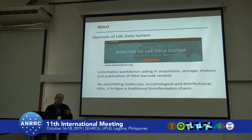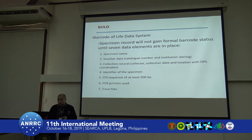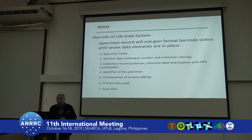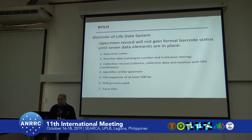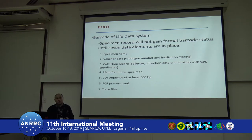Every time you submit a DNA barcode to BOLD, you must also provide the following data points: the specimen or species name, voucher data such as the catalog number and institution storage facility where it is stored, collection record including who collected it and when, the place it was collected with GPS coordinates, who identified the specimen, the sequence of the barcode whether COI or another marker, the primers utilized to amplify the sequence, as well as the raw data — the trace files.